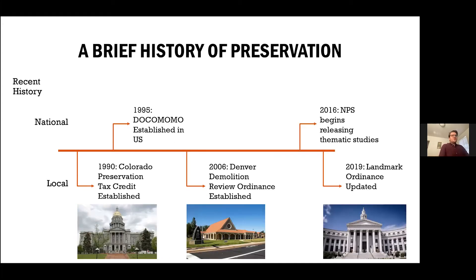Moving more into recent history, in 1990 the state of Colorado passed a preservation tax credit, which is something we'll discuss a little bit later. That marks a shift where there's an acknowledgment that for successful reuse of historic properties, some financial resources need to be made available to encourage that work.